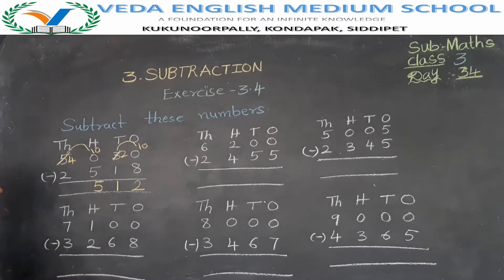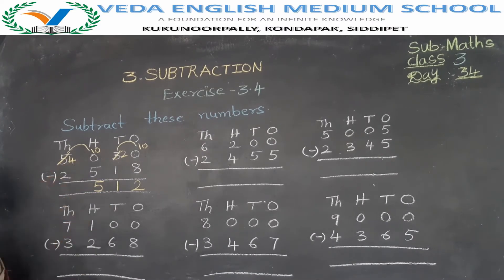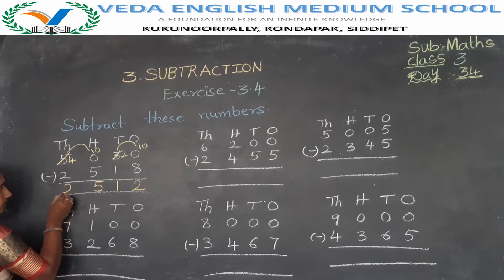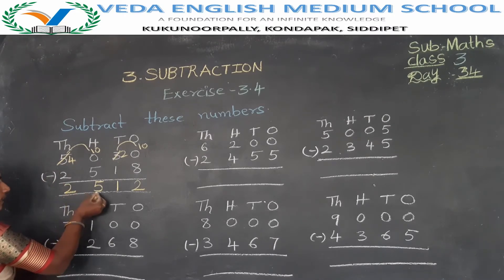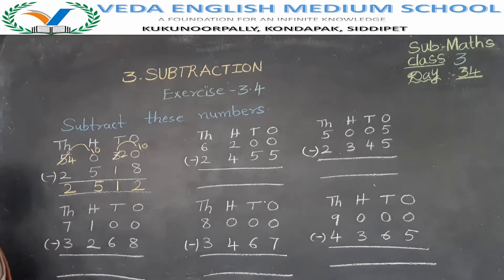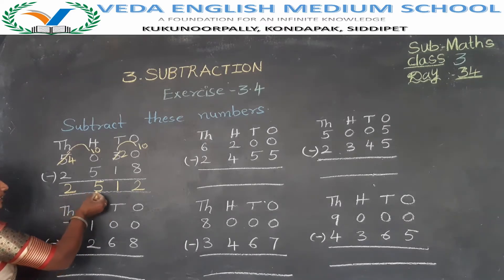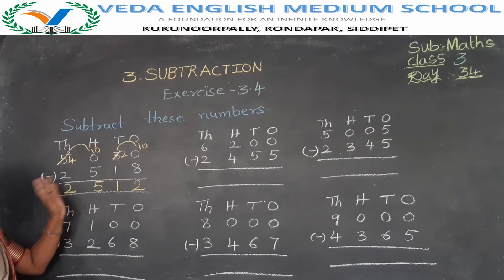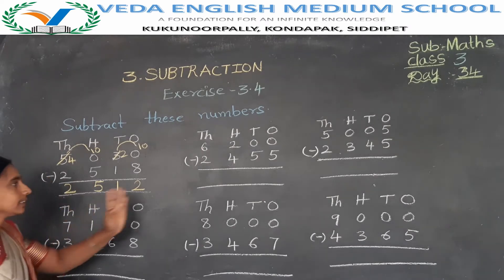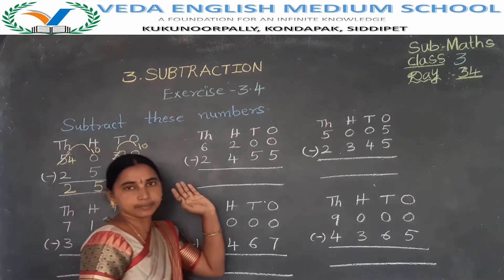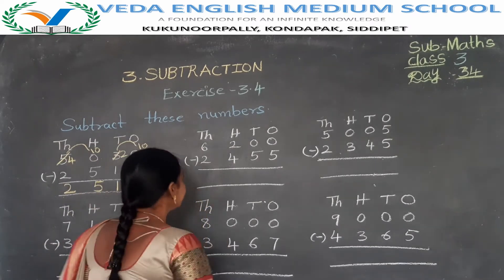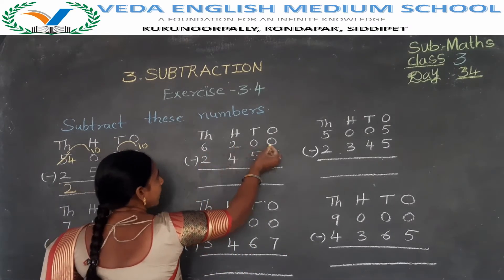4 minus 2: the difference is 2512. The difference is 2512. This problem is done. Second problem: 6200 minus 2455.